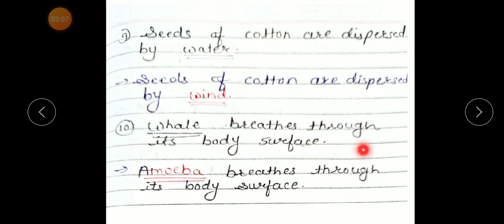Number 10: 'Whole breathe through its body surface.' Correct statement: Amoeba breathes through its body surface.